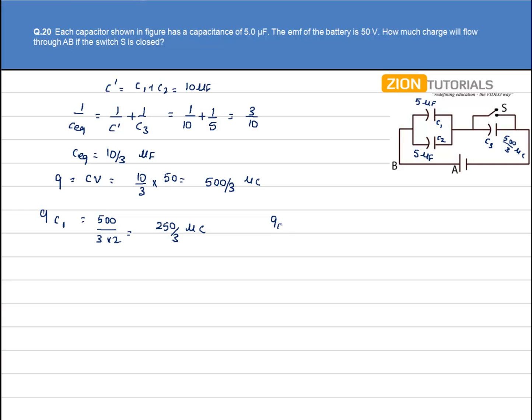And that will be the same charge on C2 that is 500 by 3 into 2 that is 250 by 3 microcoulomb. Now please note that the charges that is 500 by 3 is divided equally on C1 and C2 because the voltage across them will be same and secondly the capacitance is same and so the charge will be same.